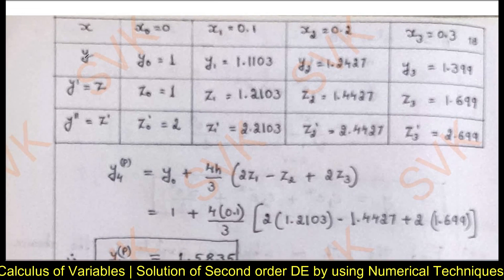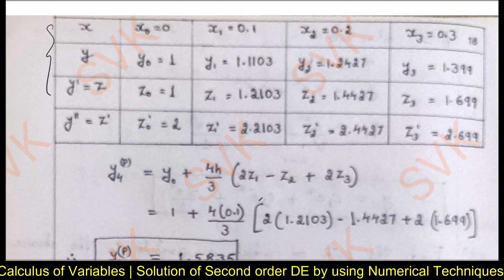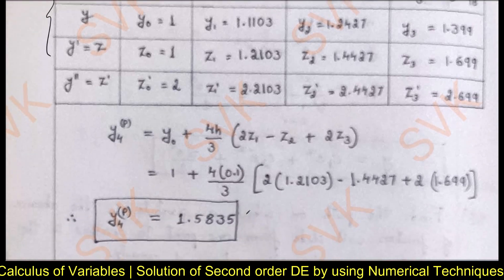Construct the table, naming y' as z and y'' as z'. List the values of z and z'. The predicted value y₄ᵖ = y₀ + (4h/3)(2z₁ − z₂ + 2z₃). With y₀ = 1 and h = 0.1, substituting the z values gives y₄ predictor = 1.5835.